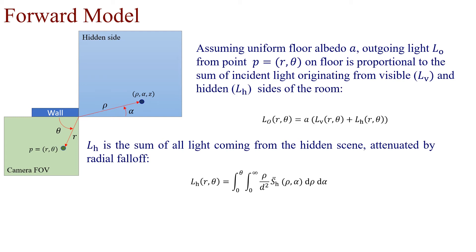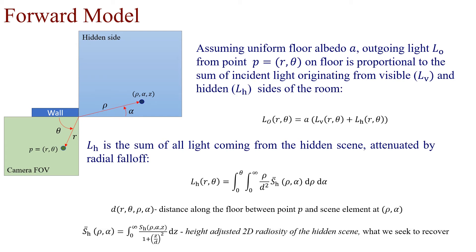Here we sum across range and incident angle. D is defined to be the distance along the floor between the point on the floor and the scene element. And SH bar is the height adjusted 2D radiosity of the hidden scene. This 2D plan view of the hidden scene is what we seek to recover with our algorithm.